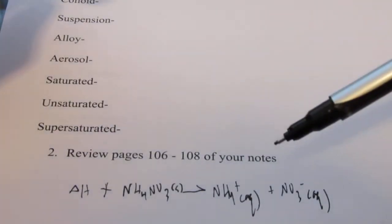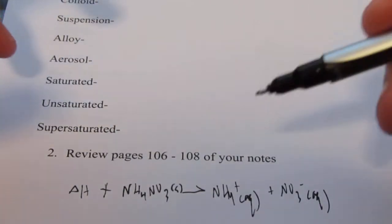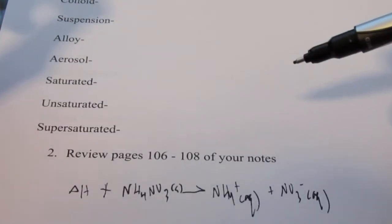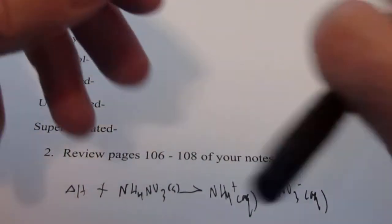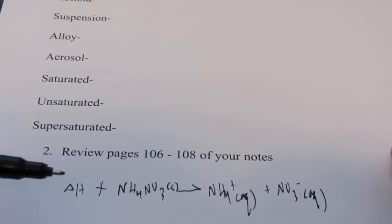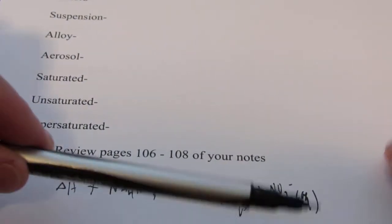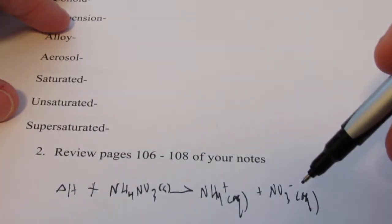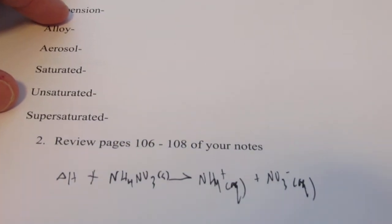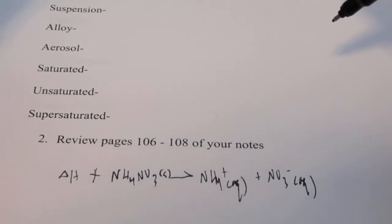So most solids dissolve this way. That means if I added heat to this, if I warmed up my solvent according to Le Chatelier's principle, the reaction would be pushed to the right. And I'd be able to make more of these dissociated ions. So I'd be able to dissolve my ammonium nitrate better. Once again most solids dissolve in this fashion.